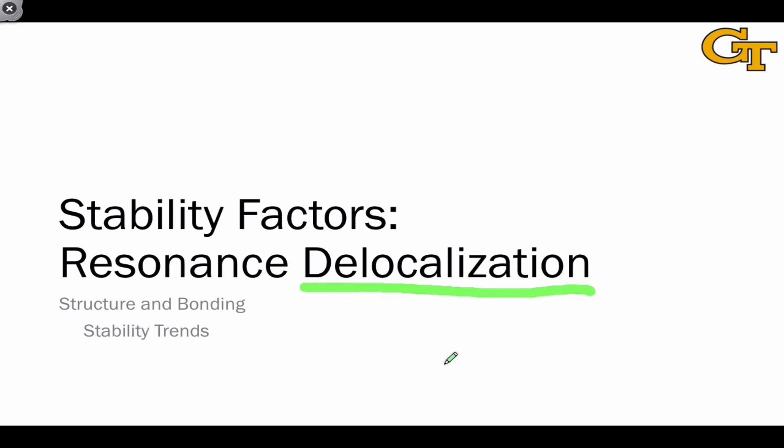In molecules characterized by resonance, electrons and charges are spread out over more atoms than they are in comparable localized structures. Because electrons repel one another owing to their negative charge, spreading them out over a larger area leads to stabilization via a reduction in these repulsive forces.